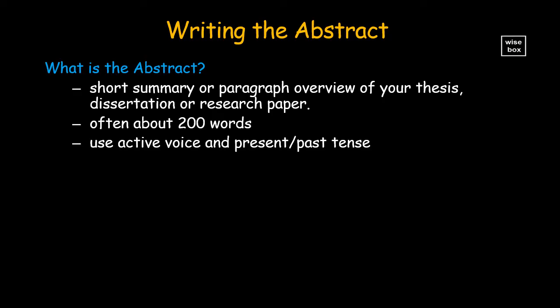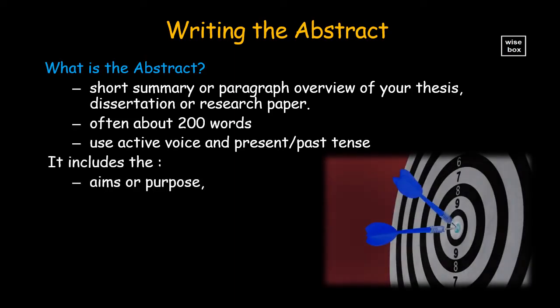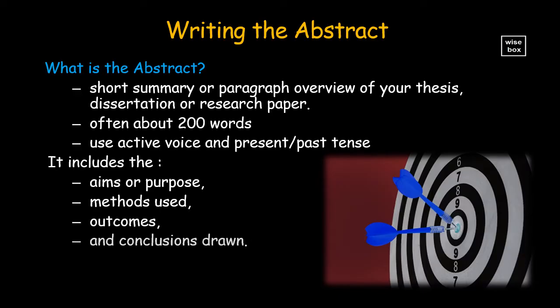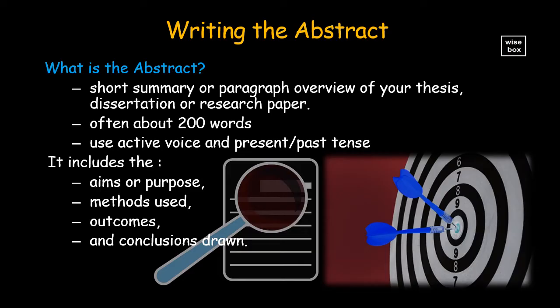Although the structure may vary slightly depending on your discipline, the abstract concisely provides the aims or purpose of your work, describes the methods you've used, reports outcomes of your research, and gives the conclusions you've drawn, so that readers know exactly what your paper is about.